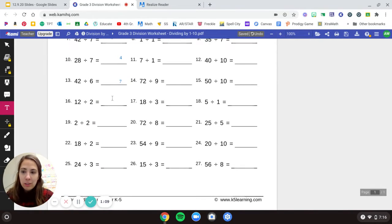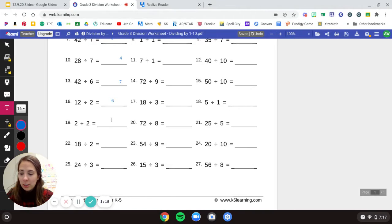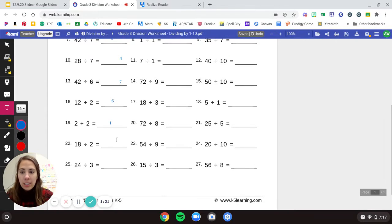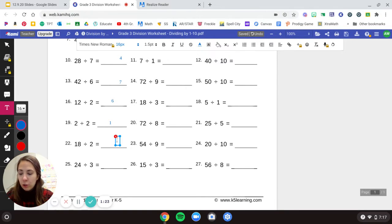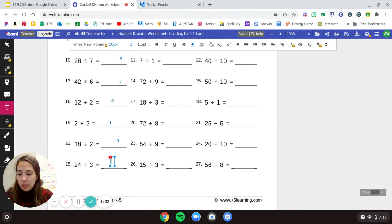And 12 divided by 2 is 6. 2 divided by 2 is 1. 18 divided by 2 is 9, because 2 times 9 is 18. 24 divided by 3 is 8.